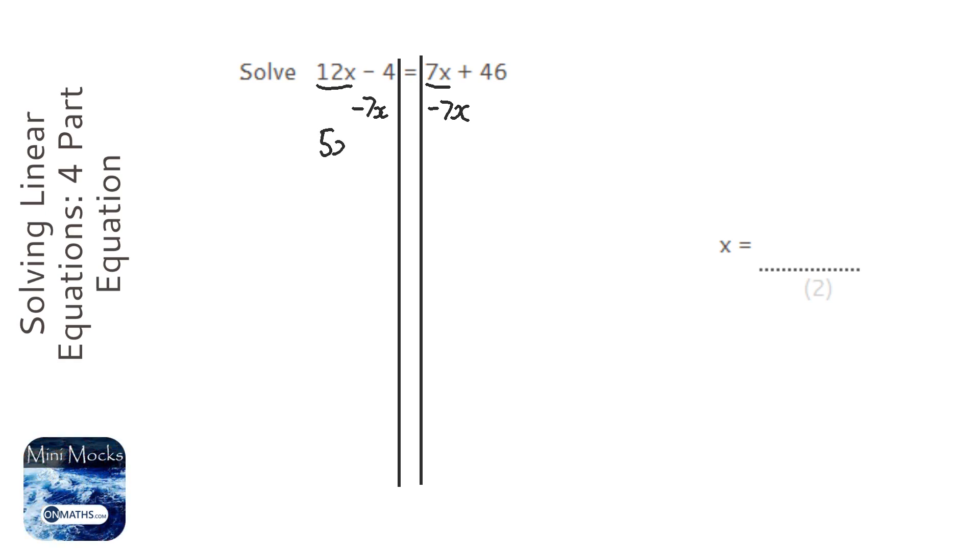Okay, so that's going to give us 5x minus 4 equals, and the 7x is gone, so it's just 46.